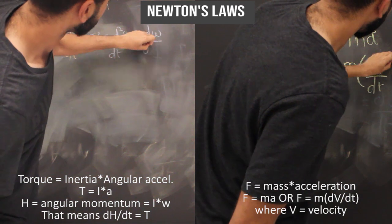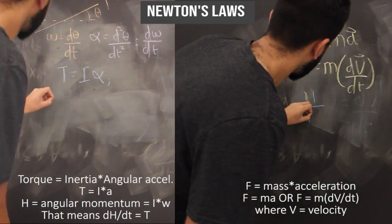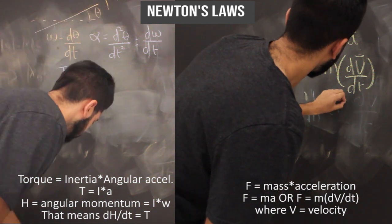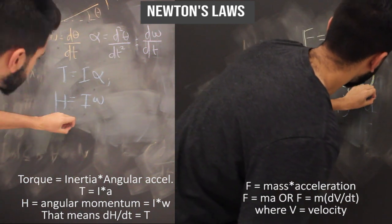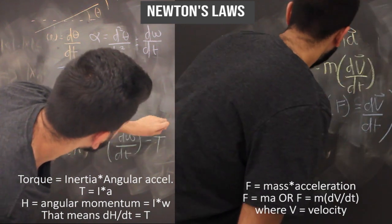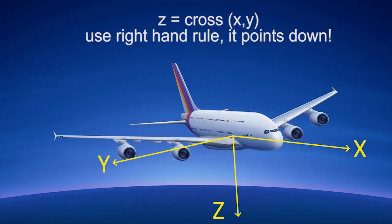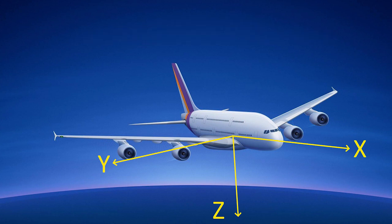For torque, you have torque equals I times alpha where alpha is angular acceleration. H equals angular momentum which is I omega, so DH over DT gives you torque. What the industry uses in aviation is as follows: X points forward, Y points right, Z points down positive. You also have your moments L, M, N.